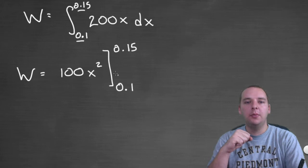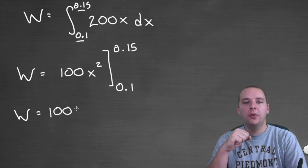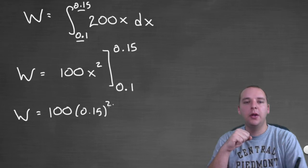Okay so we'll plug in the top number, we'll plug in the bottom number, and subtract, so we'll have 100, and then we'll have 0.15, 0.15 squared, minus 100 times 0.1 squared.